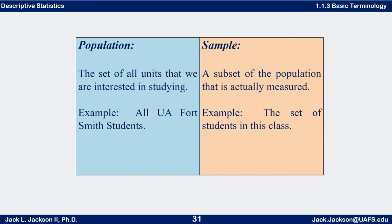A population is a set of all units that we're interested in studying. For example, we might be looking at all University of Arkansas Fort Smith students. A sample is a subset of the population that's actually measured. For example, we might only measure the students in one particular class — that would be a sample.